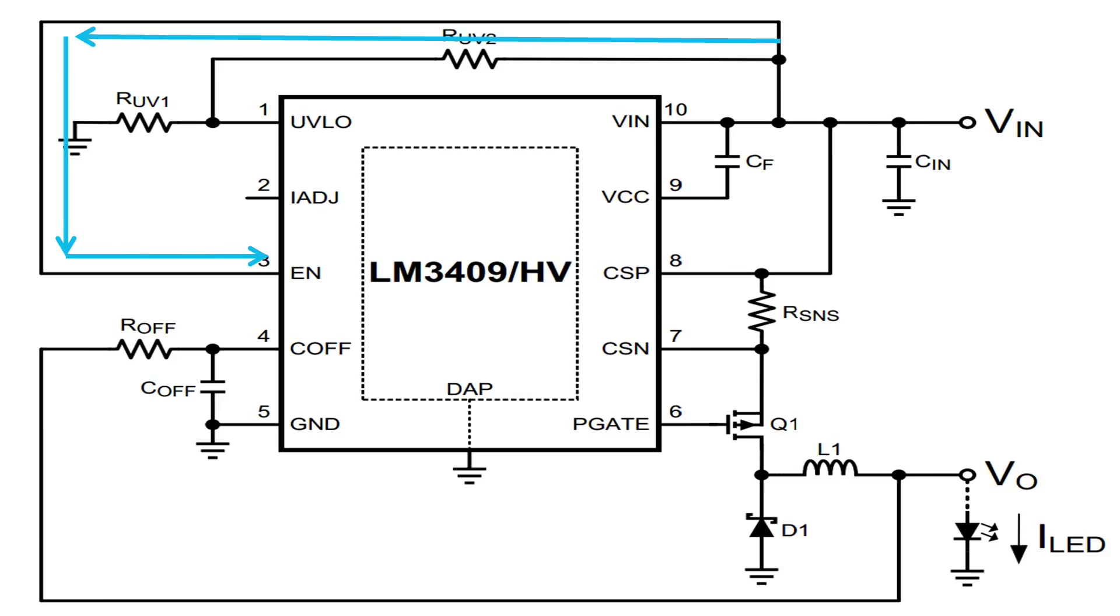The enable pin is a digital input. This can be a longer connection and will be the last connection made. Now that we have identified the high current loops on the schematic, let's take a look at this on the breadboard.